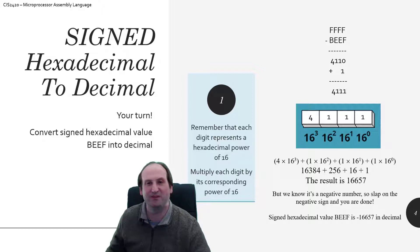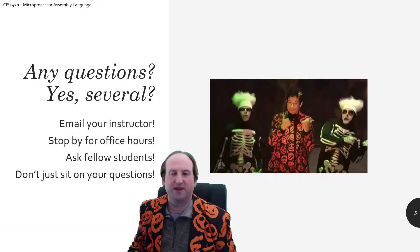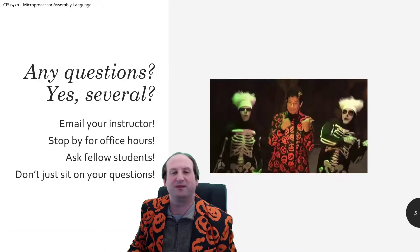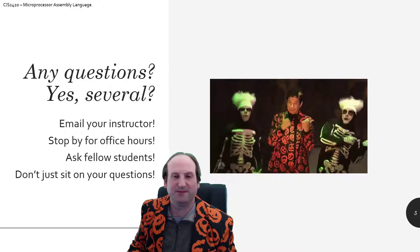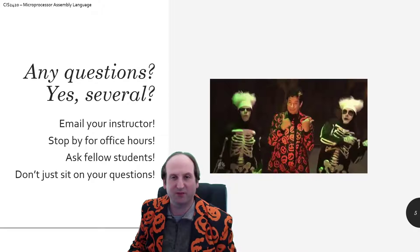And as we remember, we know this number is negative right off the bat because BEEF has that most significant digit. So we have to remember as the final step, slap a negative on this thing so the result ends up being BEEF converts into negative 16,657 in base 10 decimal. So that handles everything we need to know about converting between decimal base 10 and hexadecimal base 16 using signed representations.